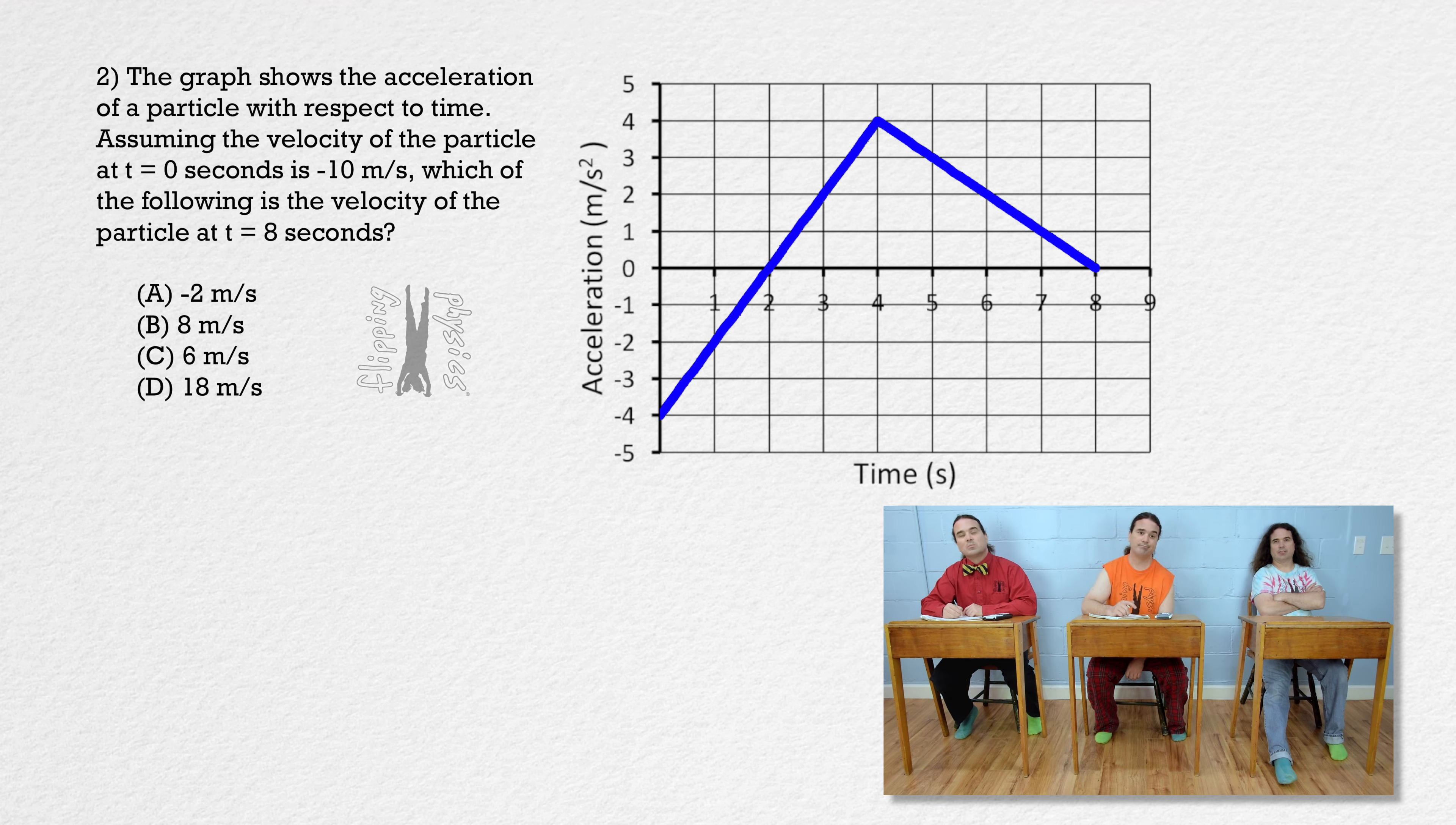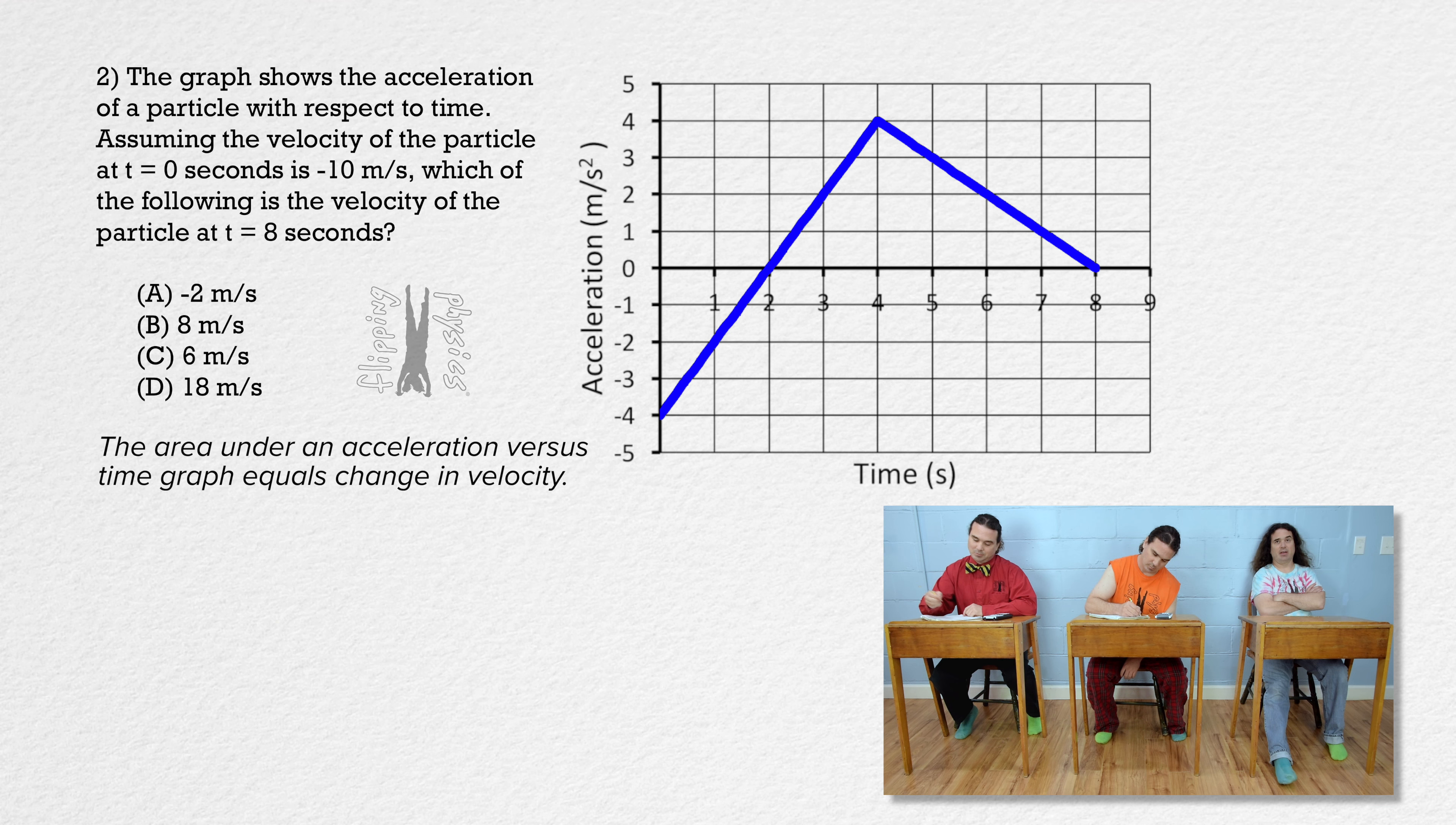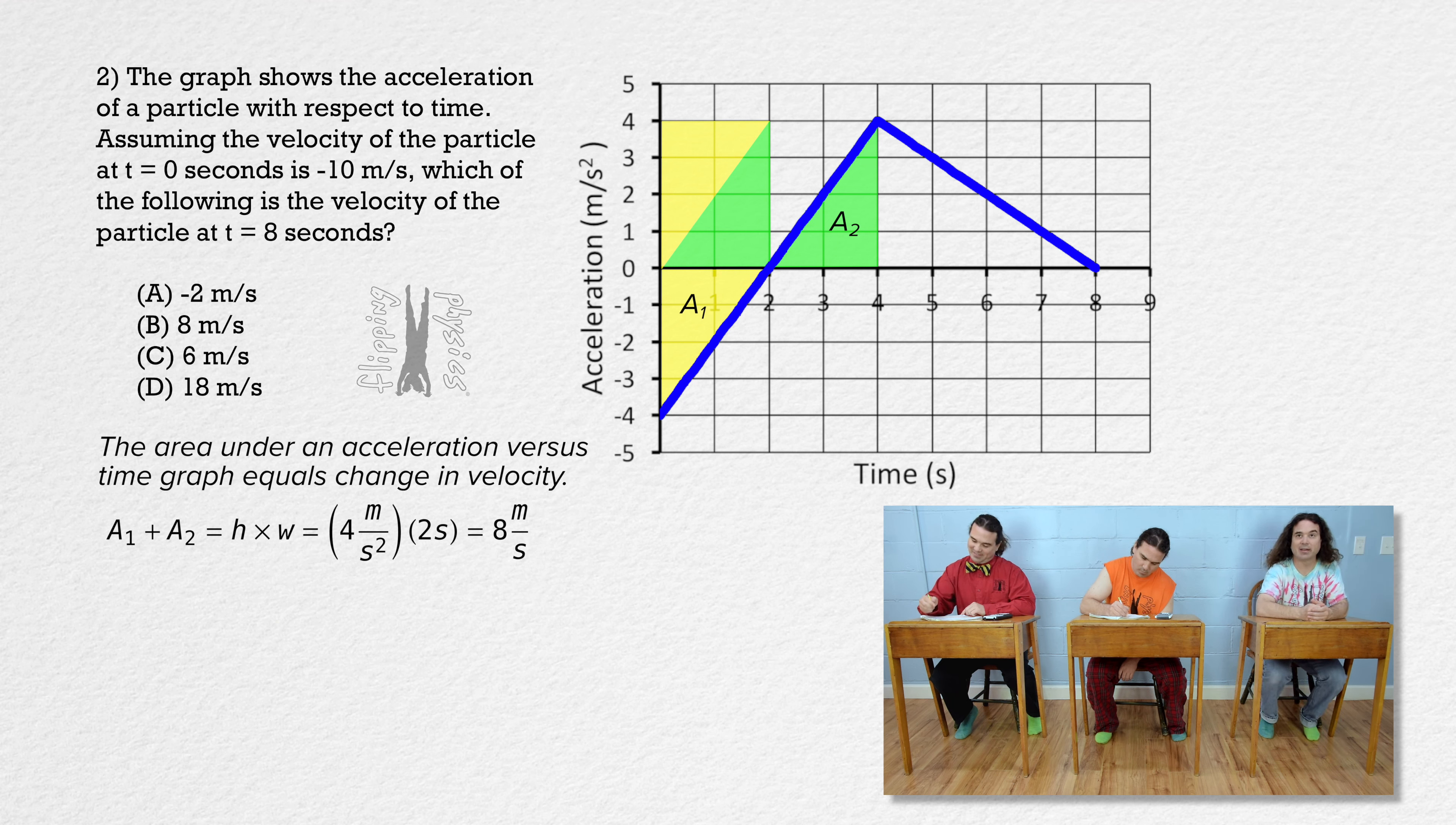In order to solve this problem, we need to remember that the area under an acceleration versus time graph equals change in velocity. The area from zero to two seconds, or area one, and the area from two to four seconds, or area two, are equal in size and add up to a rectangle with a height of four meters per second squared and a width of two seconds. And four times two gives us eight meters per second for that area.